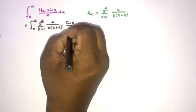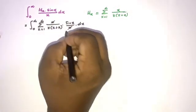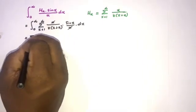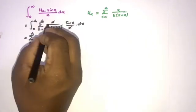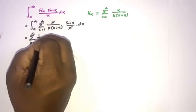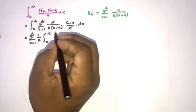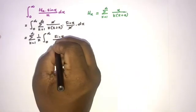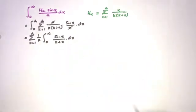The x in the numerator cancels with the x in sine(x)/x, and we can switch the sigma notation and the integral. So we have: sum from k equals 1 to infinity of 1 over k times the integral from 0 to infinity of sine(x) over (k plus x) dx.